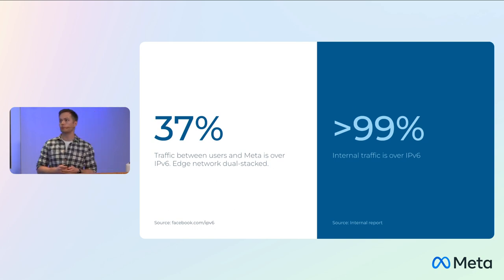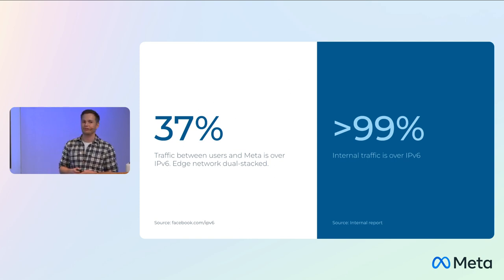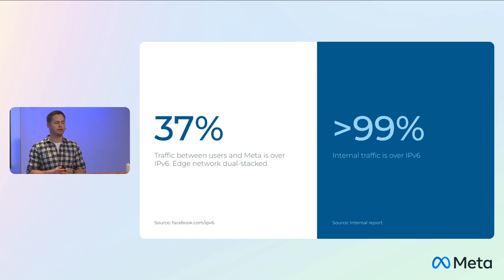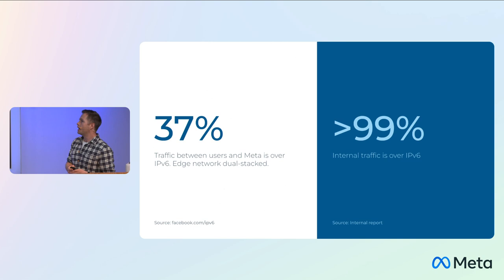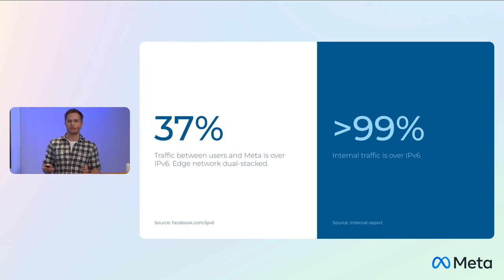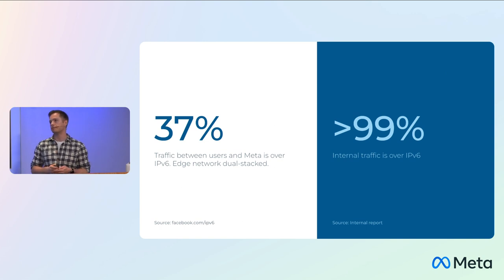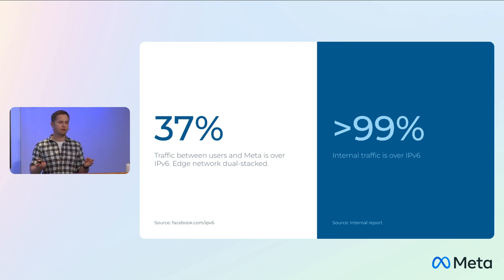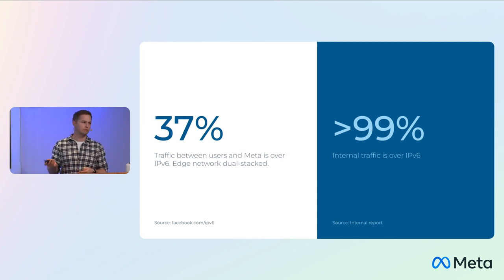In terms of IPv6, we see 37% of our egress over IPv6 — that's publicly available via facebook.com/IPv6 with breakdowns by country. Internally it's well over 99%; there really is only traces of IPv4 left internally. For anyone wondering why these numbers are so different: for egress to the internet, we're reliant on other networks. If the network connecting to us doesn't support v6, or the client doesn't support v6, then we'll serve the traffic via v4.